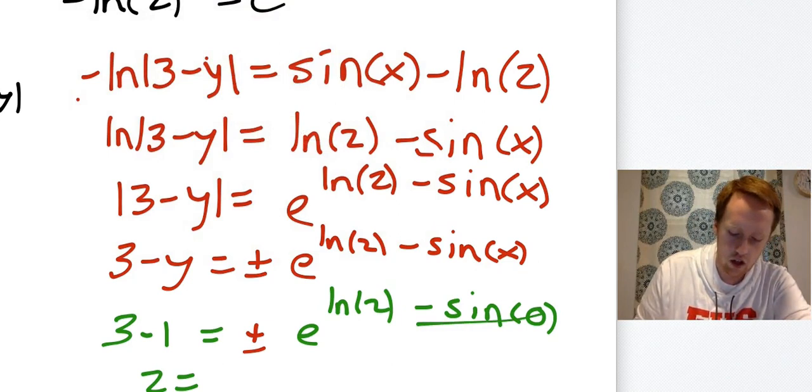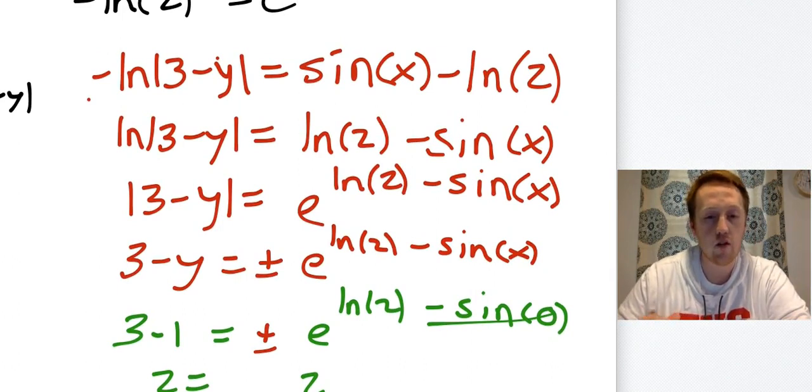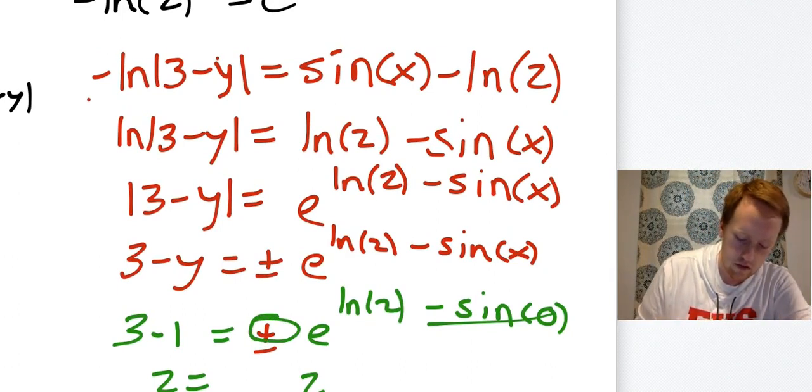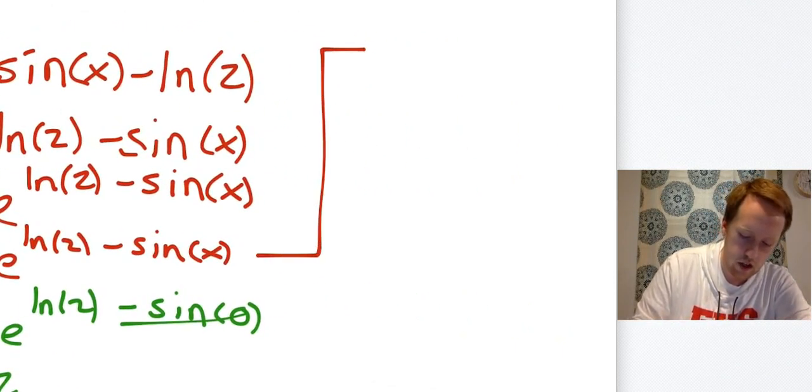And then e to the natural log of two is just two. So now I see, did I need the plus version of that two or did I need the minus? Well, I need the plus. So now I know which one it's supposed to be.